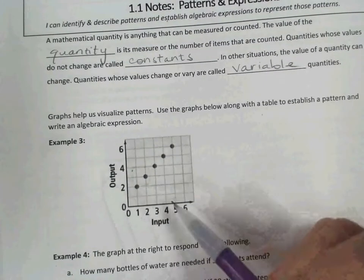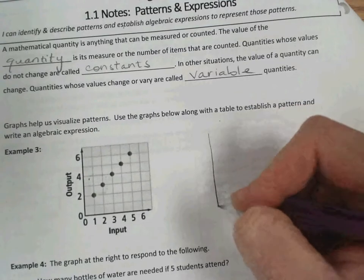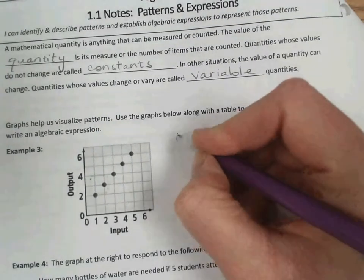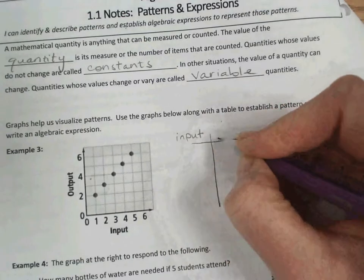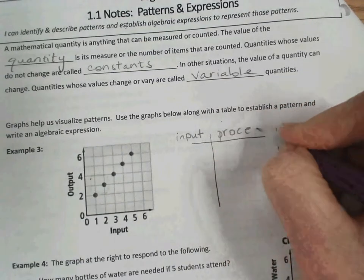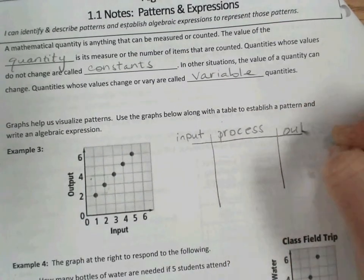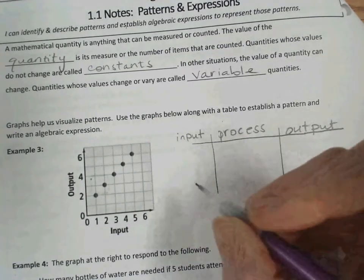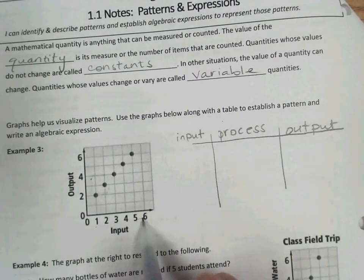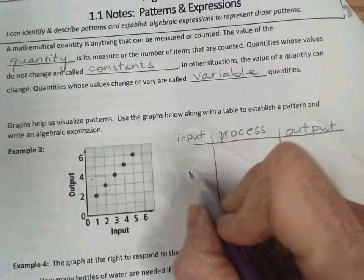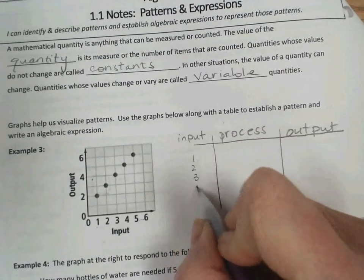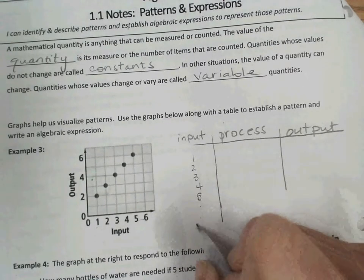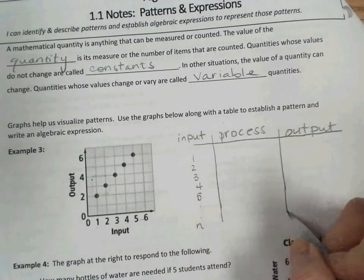So you're familiar with graphs such as this. We're going to draw a chart to establish the pattern displayed in the graph. We have the same type of chart that we created for the previous two problems. So you can see the inputs, here are the x values. So we have the inputs of 1, 2, 3, 4, and 5.